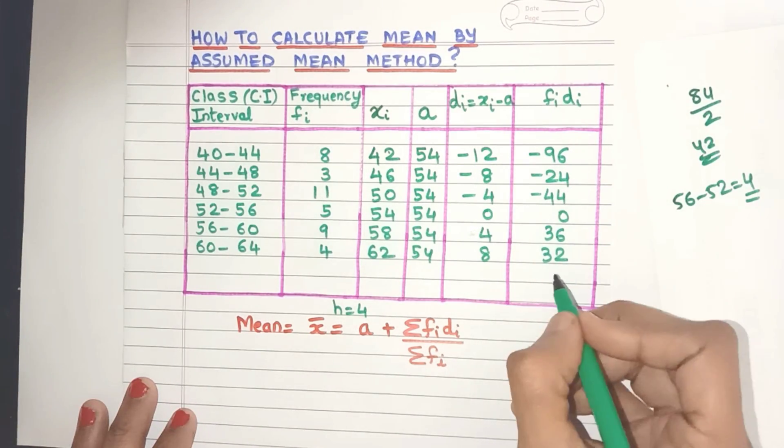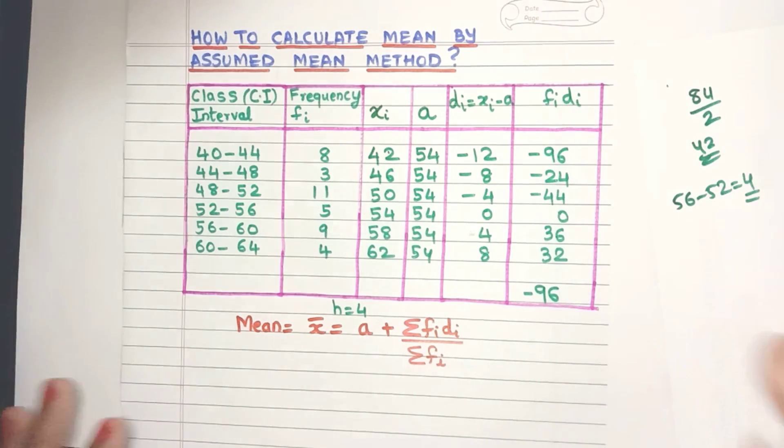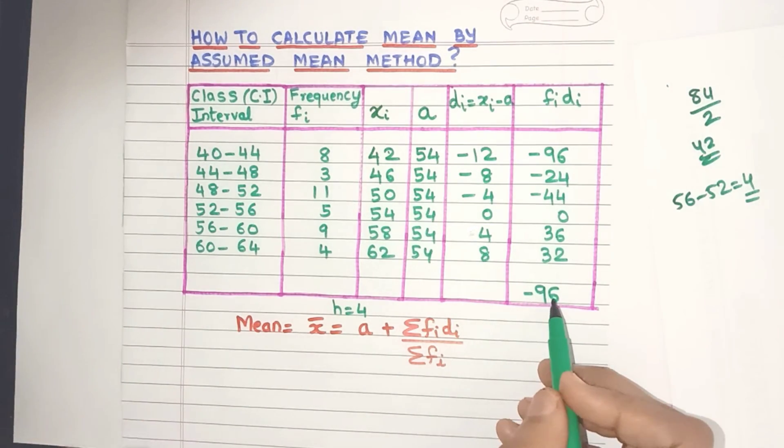Now I've already added them, friends. It comes to minus 96. Remember, it's minus and it's perfectly fine if you get negative values here. No need to worry at all.